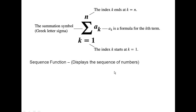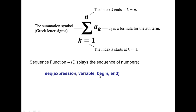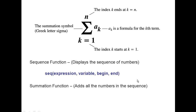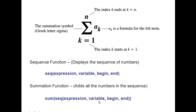The sequence function on the TI-83 graphing calculator displays the sequence of numbers. The function and its parameters are: you must enter the expression or formula, you must enter your variable, and you must enter where the index begins and where the index ends. To find the summation — to simply add all the numbers in the sequence — you use the sum sequence function. You enter the expression, the variable, the beginning of your index, and the ending of your index.